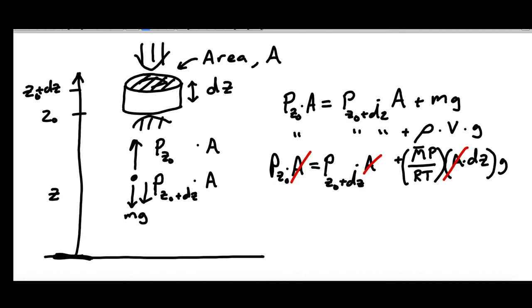And now what we're going to do is we're going to gather the pressure terms on one side. We've got P at z0, and we'll say minus P at z0 plus dz. So we're just subtracting this from both sides. And then we're going to gather this together and make it a little neater. We've got the molar mass of the gas, the gravitational constant g. We've got P, and the whole thing times dz over RT.